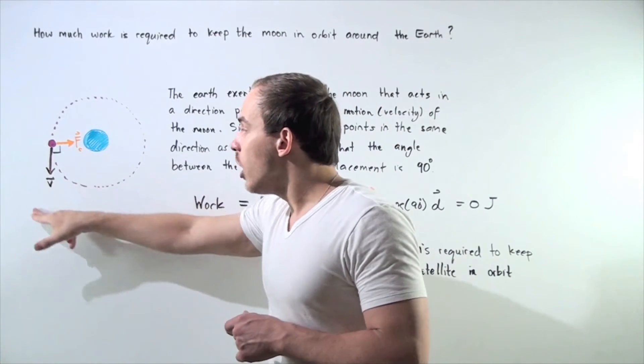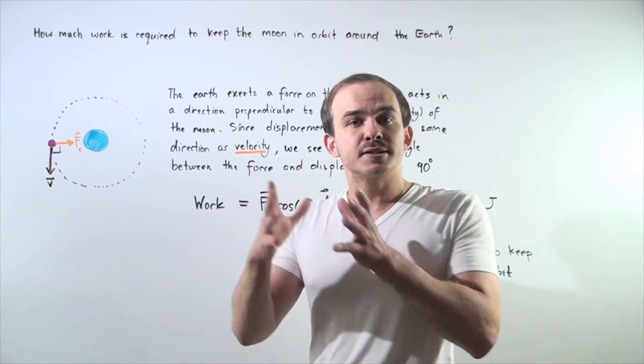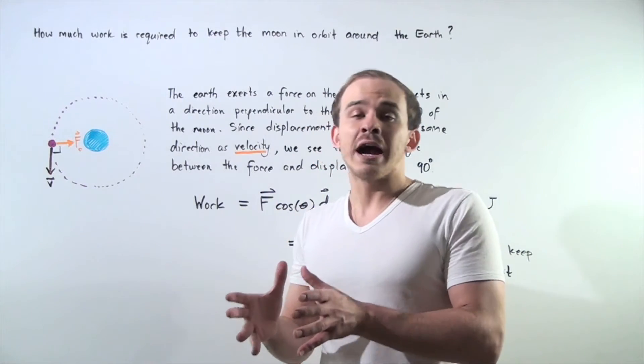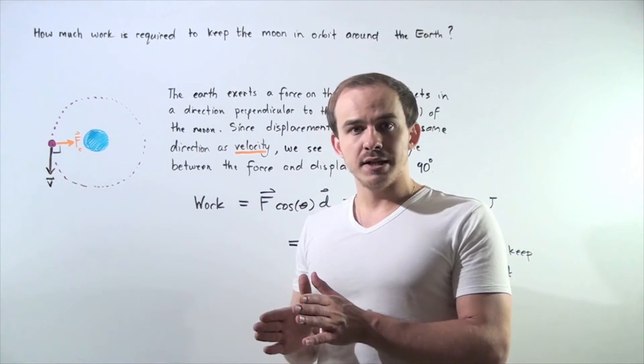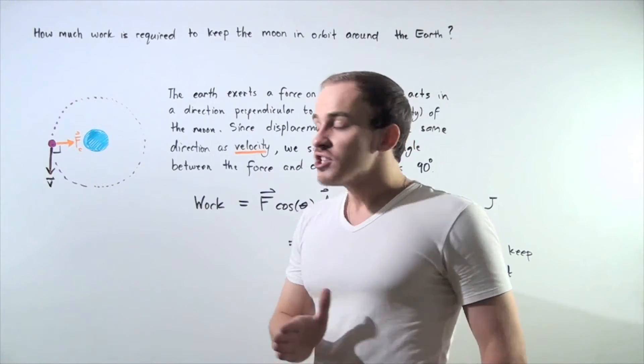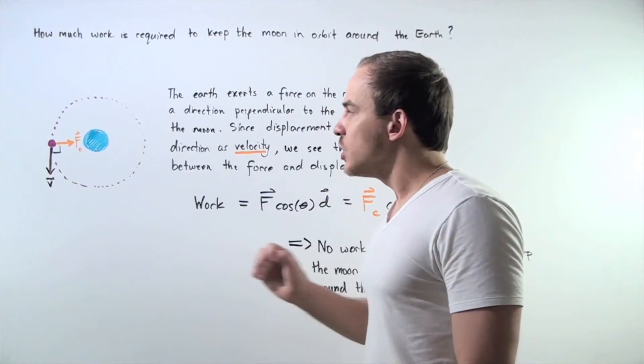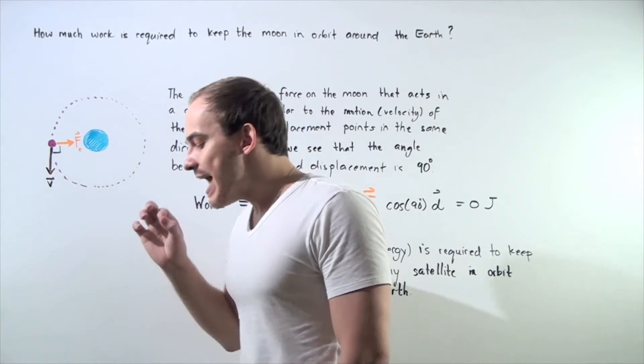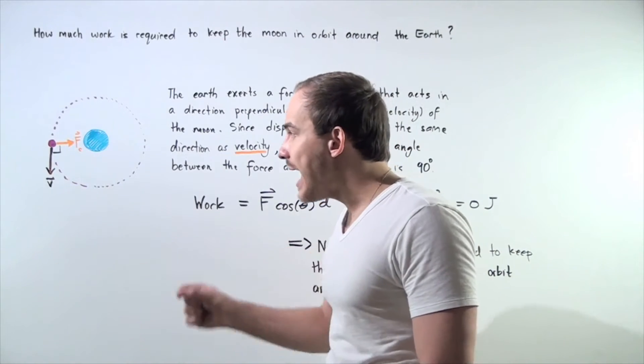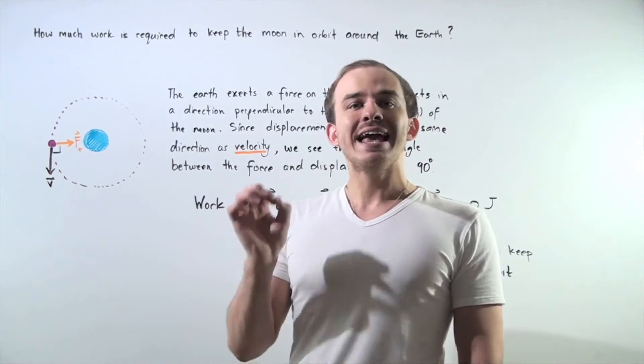Now recall what our definition of velocity is. Velocity is our displacement divided by time. That means the vector or our direction of displacement is in the same exact direction as the velocity. So our displacement is also always tangent to our pathway. That means the force acting on the object and our displacement are always at a 90 degree angle to one another.